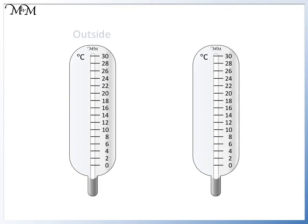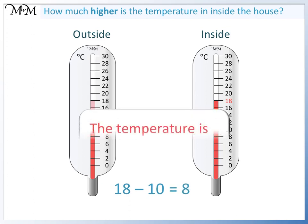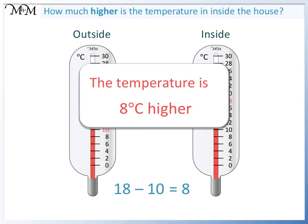The temperature outside is 10 degrees C and the temperature inside a house is 18 degrees C. How much higher is the temperature inside the house? To find the difference, we could count on from 10 or subtract 10 from 18. 18 take away 10 equals 8, so the temperature inside the house is 8 degrees C higher than outside.